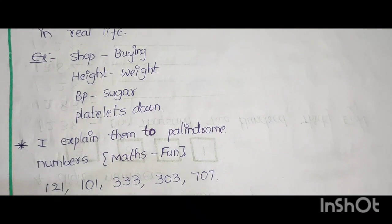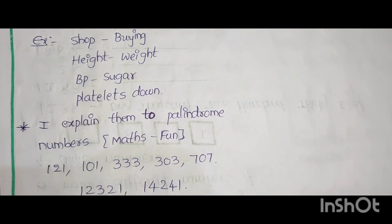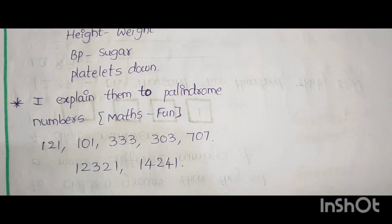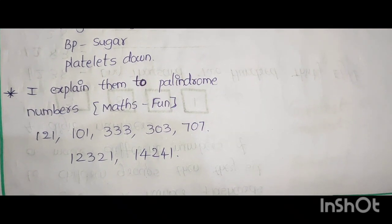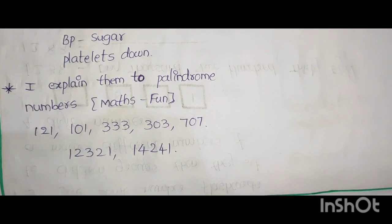I explain them to how numbers play a pivotal role in real life. Shop, buying, height, weight, BP, sugar, platelets down. I explain them to palindrome numbers. Mass fun activity. This is the mass fun activity for enjoyment and entertainment.